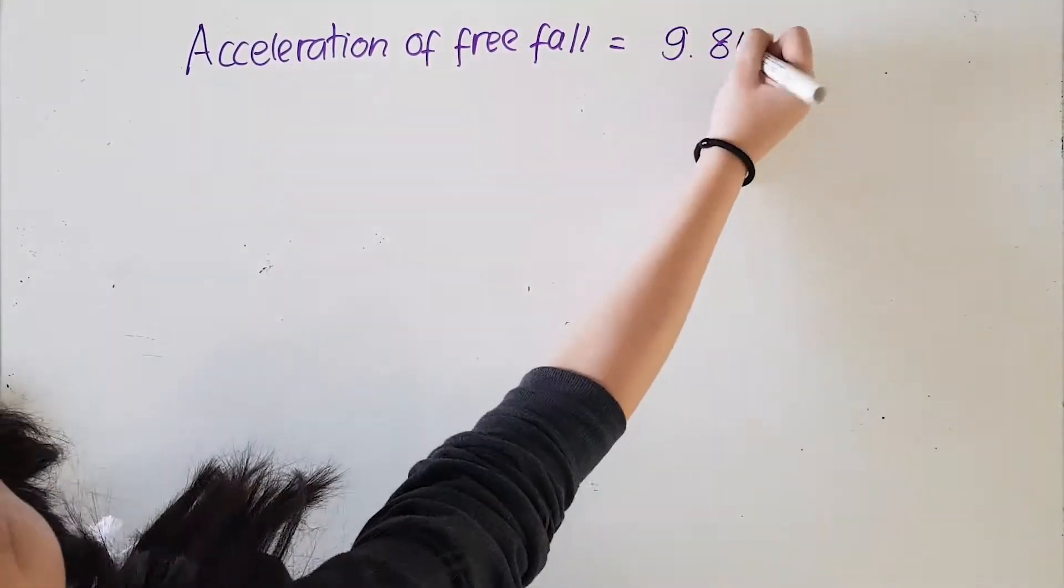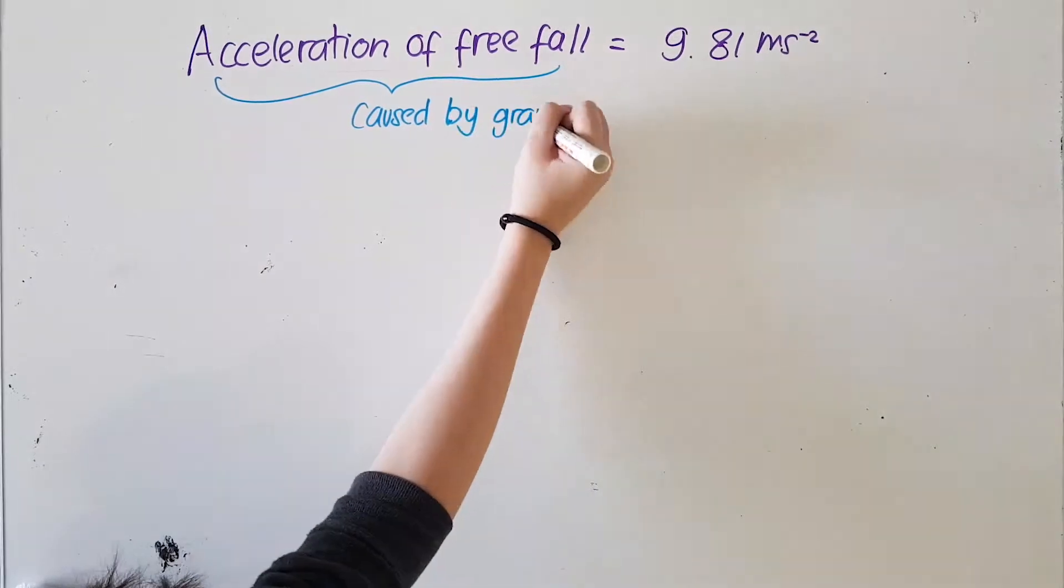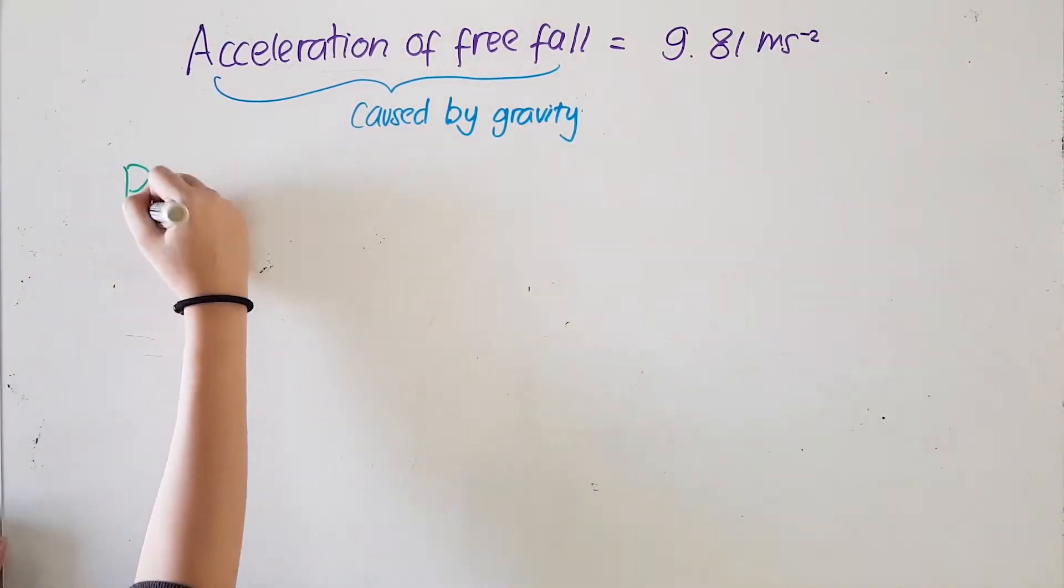Acceleration of free fall that is caused by gravity is approximately 9.81 meter per second square.